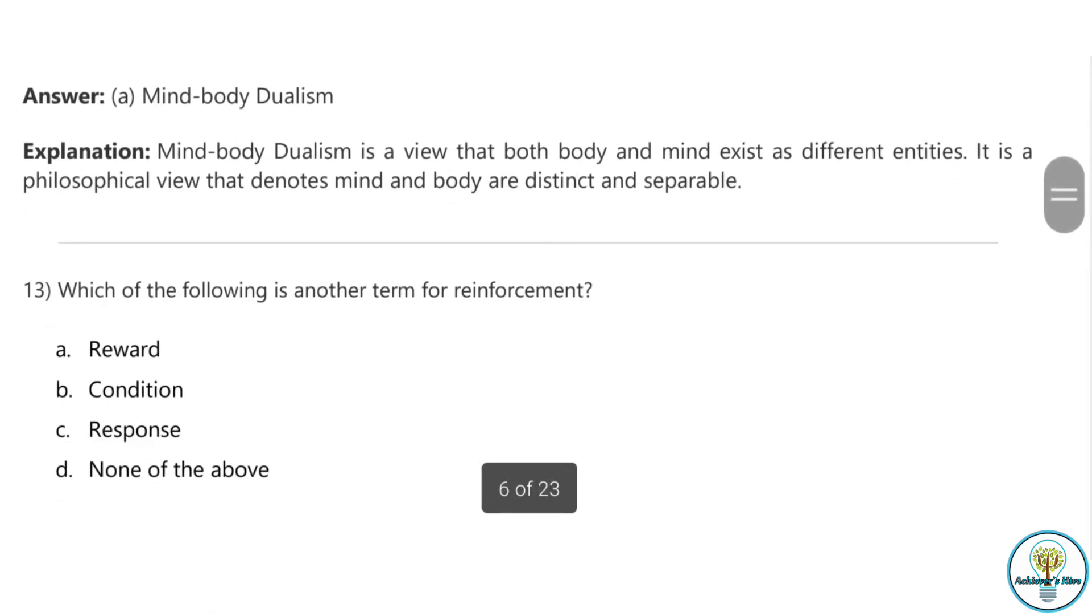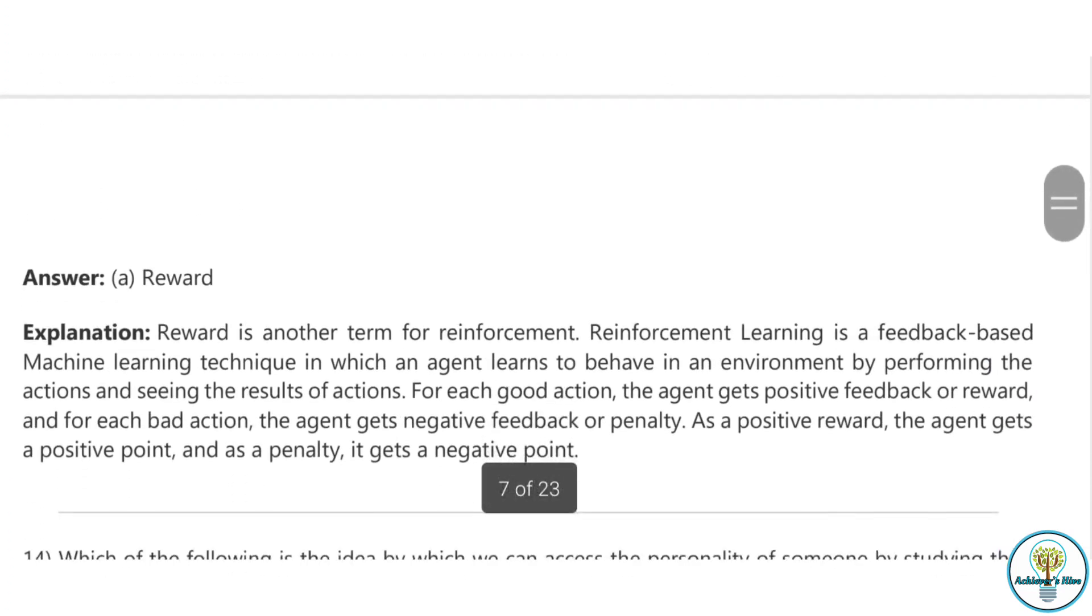Question thirteen: Which of the following is another term for reinforcement? The correct answer is reward. Reward is another term for reinforcement. Reinforcement learning is a feedback based machine learning technique in which an agent learns to behave in an environment by performing actions and seeing the results. For each good action, the agent gets positive feedback or reward. And for each bad action, the agent gets negative feedback or penalty.